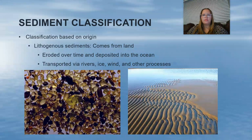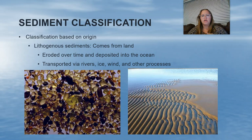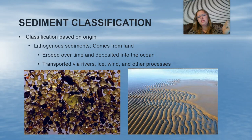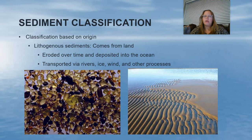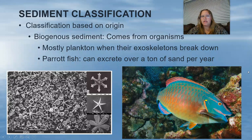The next way we classify sediment is based off of origin. The first type is lithogenous sediment — 'litho' is Latin for earth or land. This is sediment that comes from land or rocks. When rock or sediment is eroded over time, it ends up being deposited into the ocean, transported via rivers, ice, wind, and other processes. Here we see a close-up under a microscope of what lithogenous sediment looks like — rounded rocks and so on.